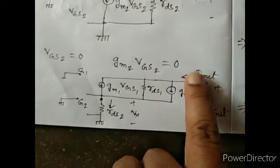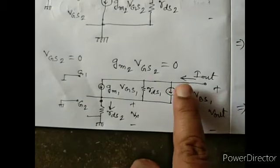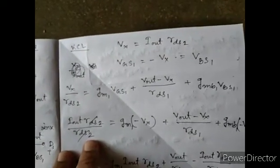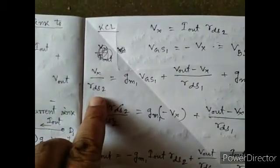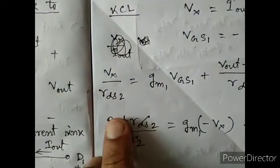Now if we apply KCL in this circuit, the Iout current passes through and divides into three branches. We can write Iout equals VX divided by RDS2, since the Iout current is passing through the RDS2 branch, giving VX/RDS2.